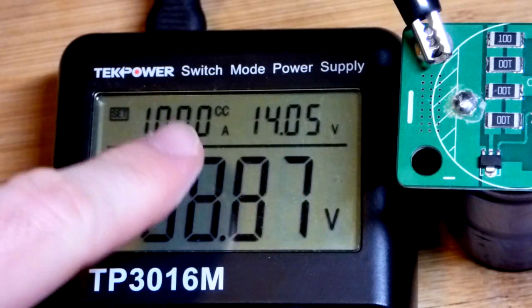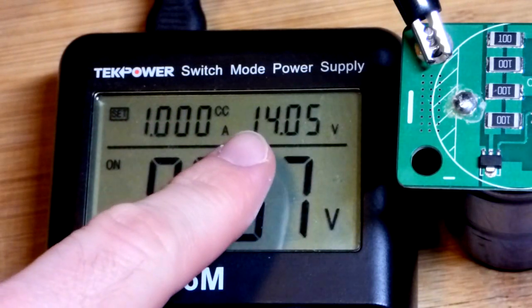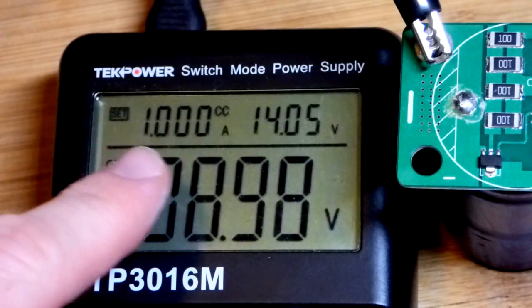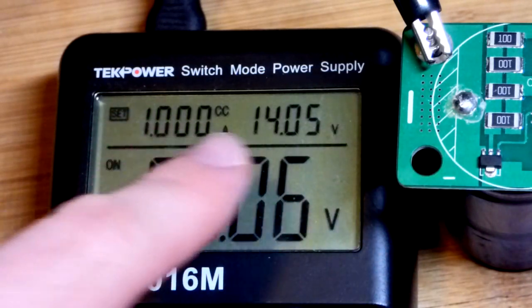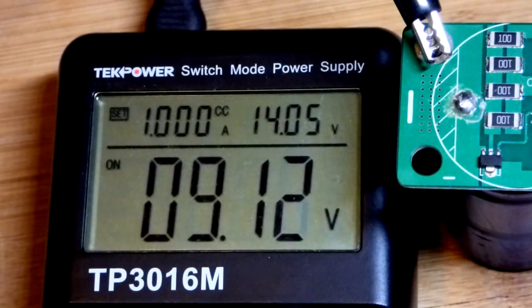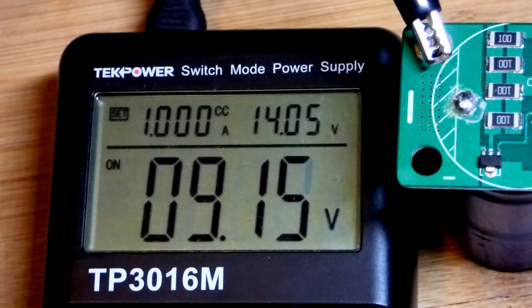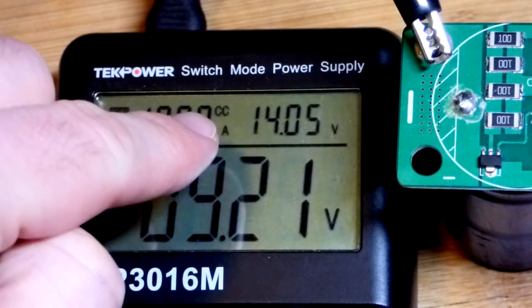So constant current means that it's providing a constant current, one amp right now. If we could limit the current with something else with our maximum, then we would have a constant voltage. It would apply a certain amount of voltage and the load would be what limits the current. But since the power supply is limiting the current, it's a constant current.